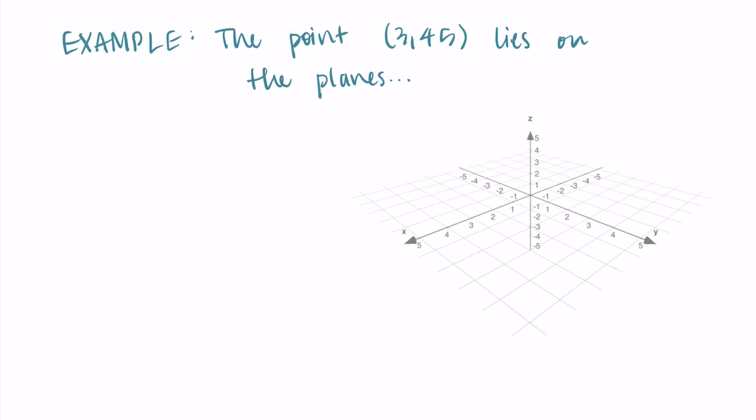Okay, so just to reinforce this with an example, let's look at the point (3, 4, 5) and talk about which planes it lies on. And I'm missing a comma here, it looks like 3, 45, but it really should be separate. So we're looking at a three dimensional point, (3, 4, 5).